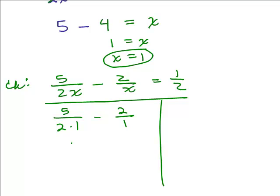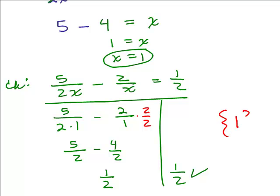And we need to simplify each fraction. So the denominator of this fraction is 5 halves minus 2. I'll write that with a common denominator by multiplying the numerator and denominator by 2, so I have 4 halves—5 halves minus 4 halves, which is 1 half. So the left side simplifies to 1 half, and the right side simplifies to 1 half. So guess what? X equals 1 does check, so the solution to this problem is 1. That checks.